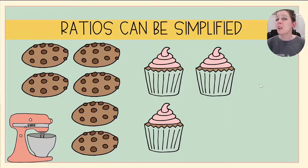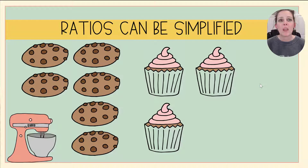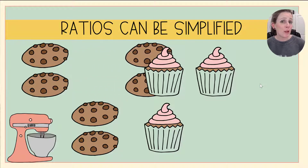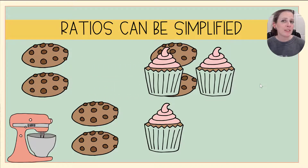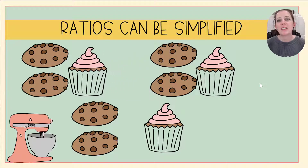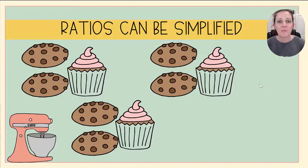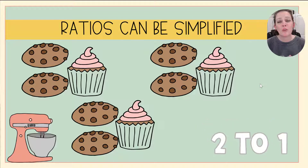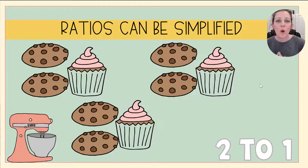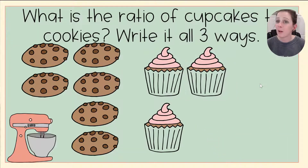Ratios can also be simplified, just like we can simplify a fraction. If I do a little rearranging with my cookies and cupcakes, it makes it easy to see that six to three simplified gives us two cookies to one cupcake — for every two cookies, I have one cupcake.